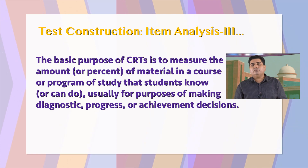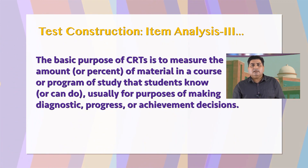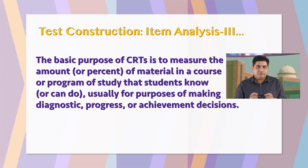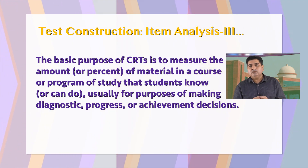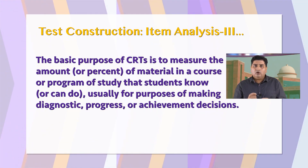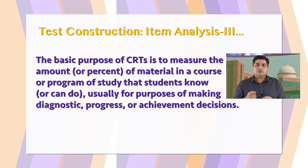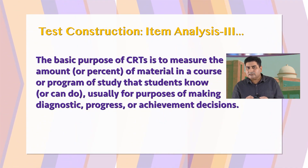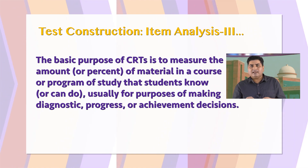We will discuss this by taking our third case. In the third case, we planned to construct a criterion reference achievement test for an English language class, and we completed all the planning related requirements. The basic purpose of a criterion reference test is to measure the amount or percent of material in a course or program of study that students know or can do. It is usually used for the purpose of making diagnostic, progress, or achievement decisions.